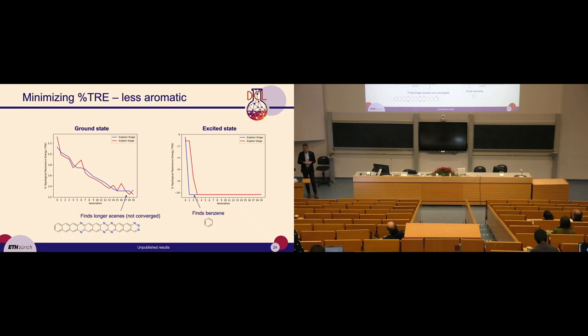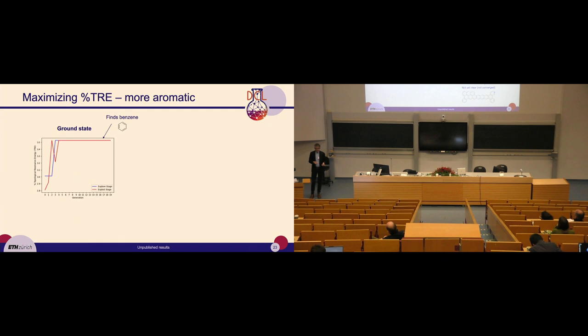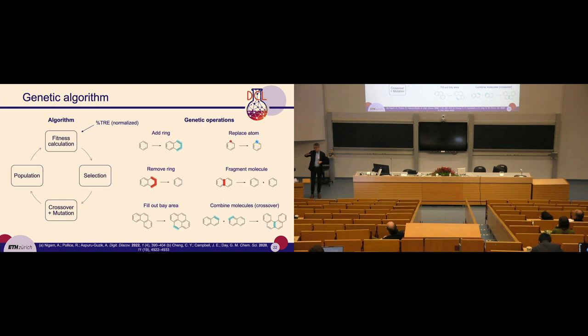The genetic algorithm also has an explore-and-exploit feature visible in the plots. It uses different genetic operations to take larger steps in chemical space or to exploit closer to where it currently is. It actually contains two populations — one exploitation population and one exploration population. For exploration, for example, you might do a crossover where you combine two molecules to get something completely new.